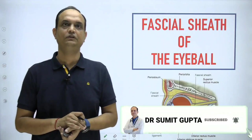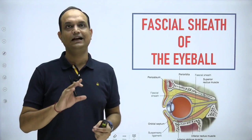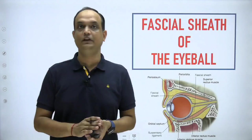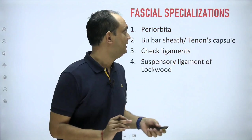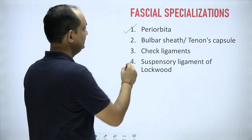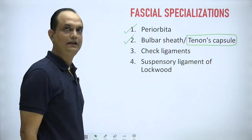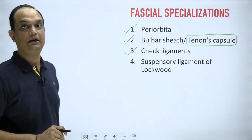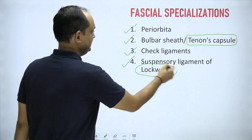Today we will start with the facial sheath of eyeball. When you open the orbit, you will realize that inside the orbit you have the covering of periosteum and some modification of the fascia. We will discuss all these structures inside the orbit: the periorbita, tenons capsule, check ligaments concerned with the medial and lateral rectus muscle, and the suspensory ligament of lockwood.